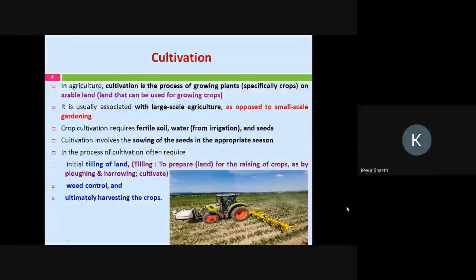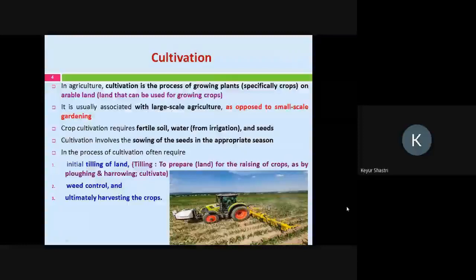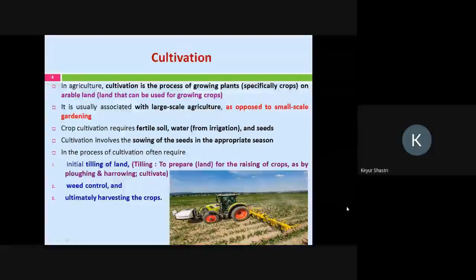In the process of cultivation, you often require initial tilling of the land. There is some land which you need to prepare for raising or cultivating a crop. For example, you will require vehicles such as a tractor for carrying out the process of plowing or breaking the clods. For that, the harrowing technique is used — they break up the clods and ensure that pores are available within the soil, so that you are able to carry out cultivation properly.